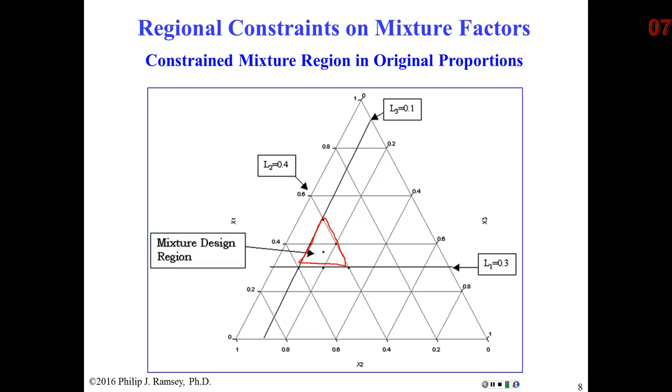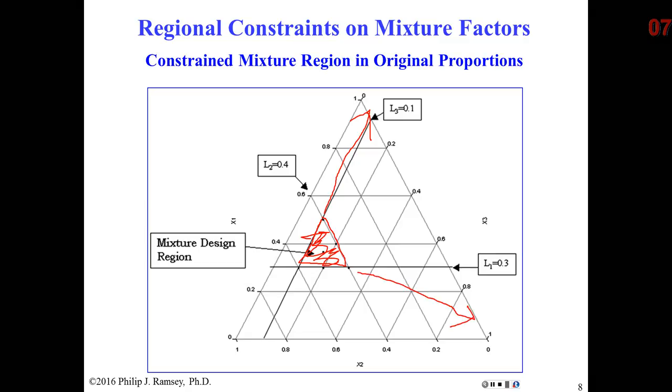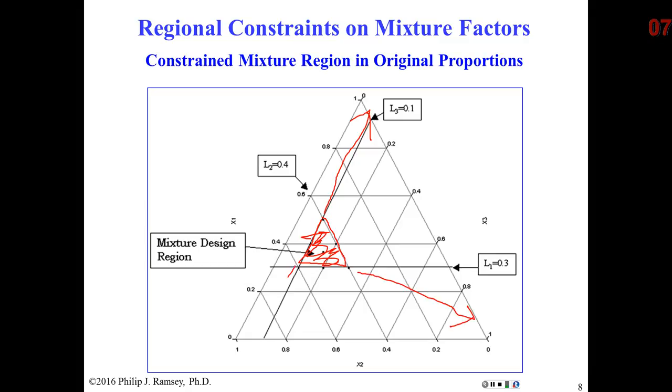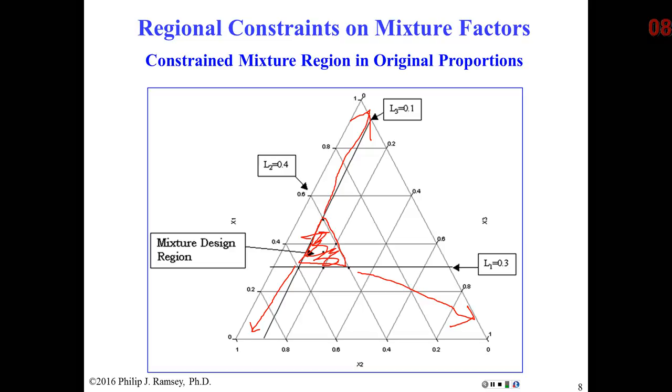So this presents a problem because all of our data is in here, but we're going to extrapolate that model to the whole design region. The result of that is you can get some very unstable coefficient estimates.